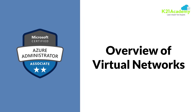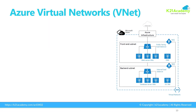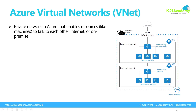So let's look at what a virtual network is called in Azure, which is also called VNet or virtual network. What you see in the right-hand diagram is a virtual network on Azure cloud — the outer dotted line represents the virtual network. A virtual network is nothing but a private network in Azure cloud that enables resources like machines to talk to other machines, talk to the internet, or to an on-premise network. This network helps in machine communication.